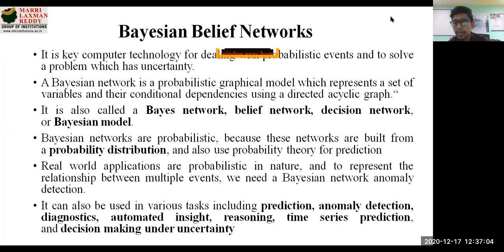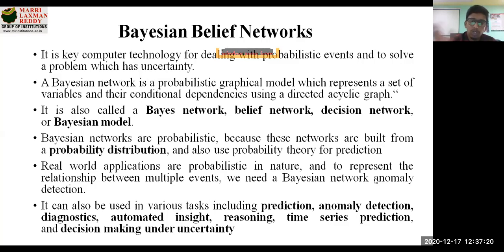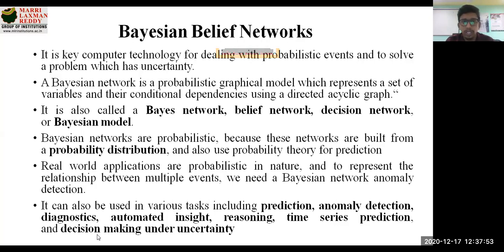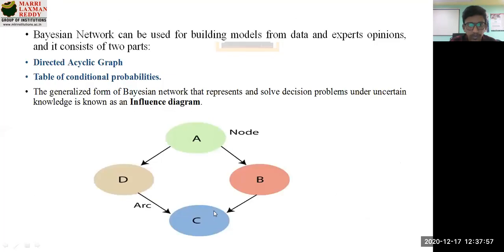In real-world applications there are many probabilistic problems, and to represent relationships between multiple events we use Bayesian networks in different areas. Applications include prediction, anomaly detection — detecting whether an intruder is occurring in your network — diagnostics, automated insight reasoning, probabilistic reasoning, time series prediction, and decision making under uncertainty, which is the core concept we are discussing.